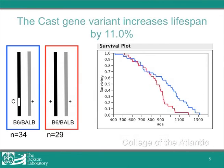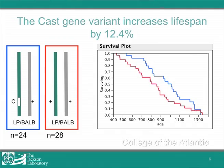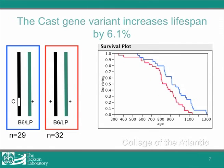As you can see here, the carriers of the cast allele at LEG2 lived an average of 11% longer than non-carriers of the cast allele. In the second population, we saw a 12.5% increase. And then in the third population, we saw a 6.1% increase. This report is the first confirmation of a mammalian allele with a dominant mode of inheritance that significantly regulates lifespan.